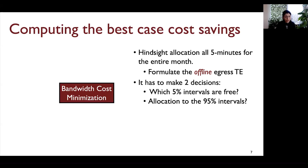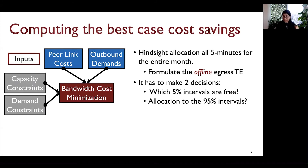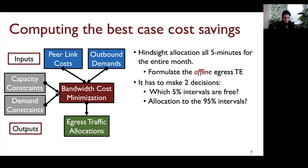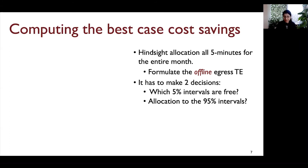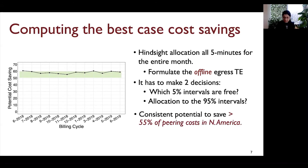At a high level, our objective was cost minimization at the edge. The inputs were demands and link costs; we constrained the algorithm to respect link capacities and meet all demands. The outputs were outbound traffic allocations on peer links. We implemented this algorithm and evaluated it on historical traffic demands from a large commercial cloud network. On the x-axis I have 12 monthly billing cycles — over one year of traffic demands — and on the y-axis the cost savings enabled by the offline traffic engineering algorithm. Consistently, there is a potential to save over 55% of bandwidth costs.